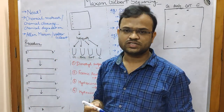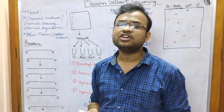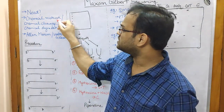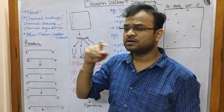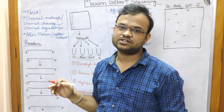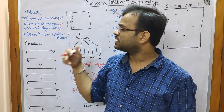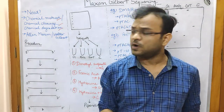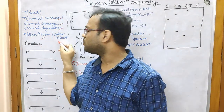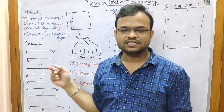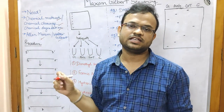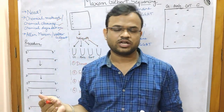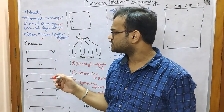Maxim Gilbert sequencing is also called the chemical method of sequencing, the chemical cleavage method of sequencing, or the chemical degradation method of sequencing. These three names are synonyms. It was discovered by Allan Maxim and Walter Gilbert, and the technique is named after these two scientists.